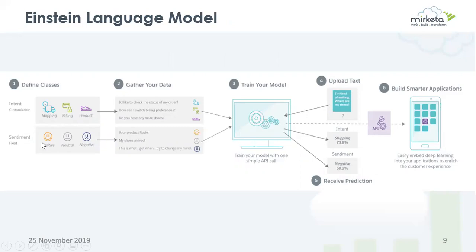After defining classes, we gather our data. In intent we have different types of data based on shipping, billing, and product. In sentiment we have a large dataset based on positive, neutral, and negative. After doing this we train our model, and machine learning generates a unique model ID to correctly create the dataset. We then upload new text and the trained model gives a prediction by label name — for example, in intent we have shipping at 73.8% accuracy, and sentiment which is negative at 60.2% accuracy.